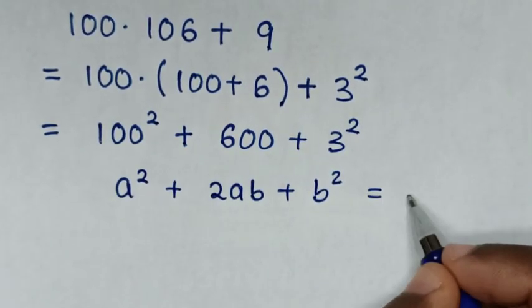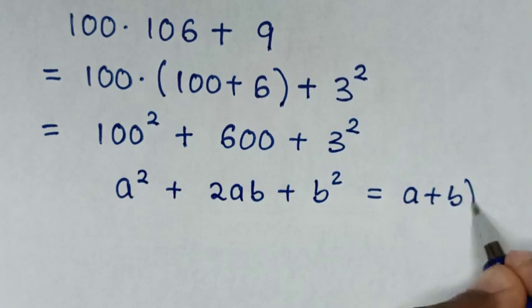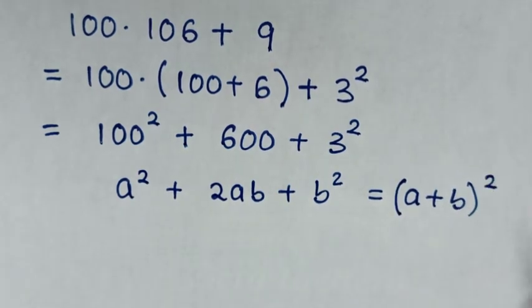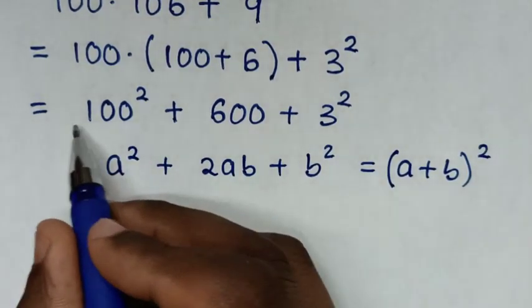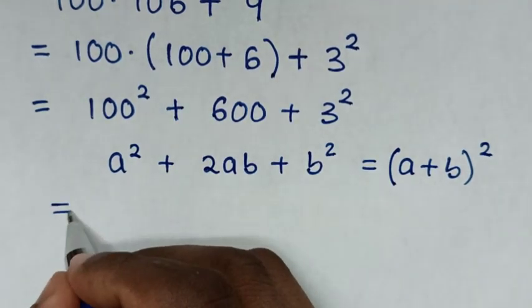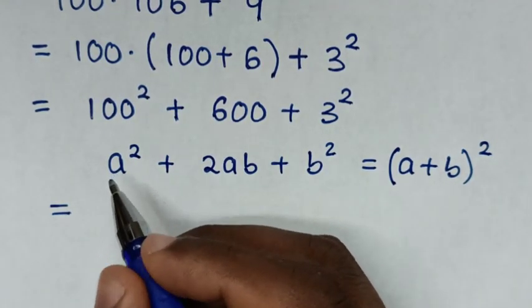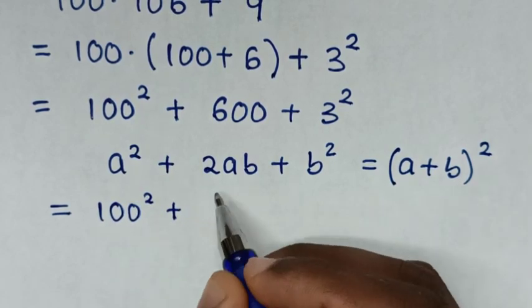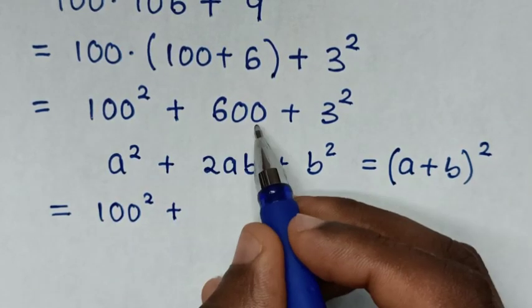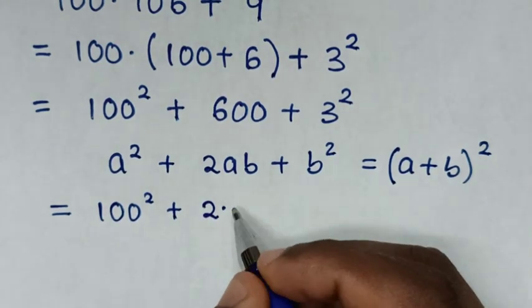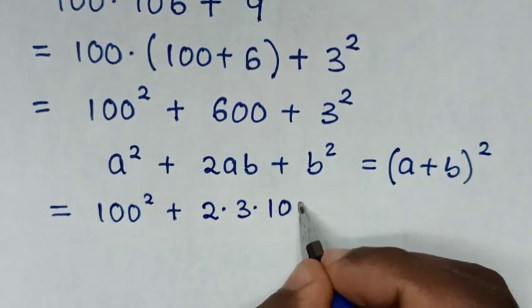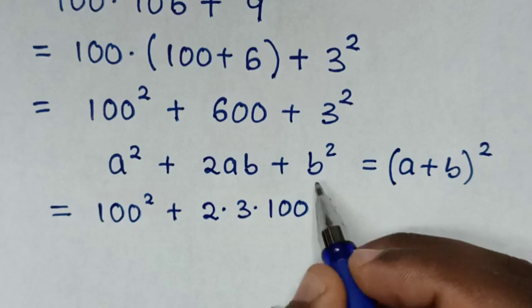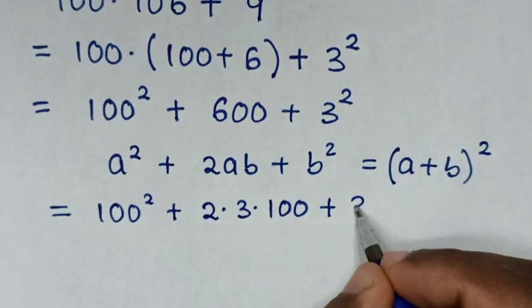Then this expression will be equal to a squared is this 100 squared, then plus 2ab from 600 is 2 times 3 times 100, then plus b squared is this 3 squared.